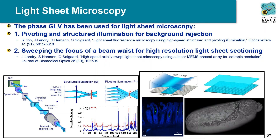Researchers at Stanford University have also used the GLV for different light sheet microscope modalities. In the configuration on the left, the GLV acts as a complex modulator to pattern and pivot a light sheet. The structured illumination of the patterned light from multiple angles allows for enhanced background rejection and shadow mitigation. In another configuration on the right, the phased GLV acts as a depth scanner, sweeping a tight Gaussian waist across the field of view. By synchronizing this scan with the rolling shutter of a camera, beautiful 3D light sheet sectioned images with high isotropic resolution can be captured in record time.